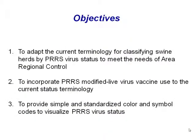The objectives of coming up with this adaptation of the classification were: first, to better adopt the current terminology of classifying swine herds to meet the needs for a regional control project. Second, to incorporate the use of first modified live virus vaccine into the classification, because at this time we have no distinction between a positive site that has only field virus versus one that has only vaccine virus. Third, to provide a simple and standardized color and symbol code to visualize first virus status in those farms.